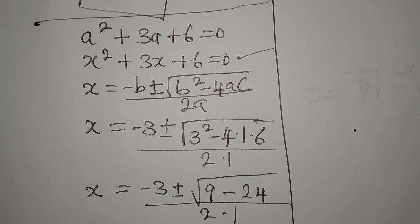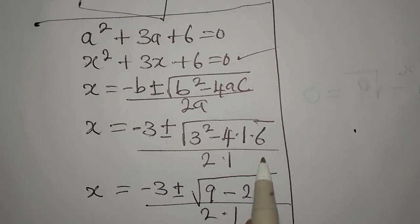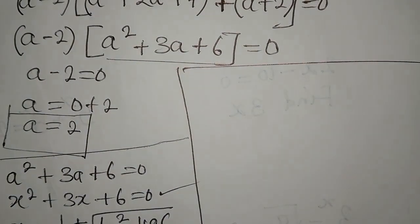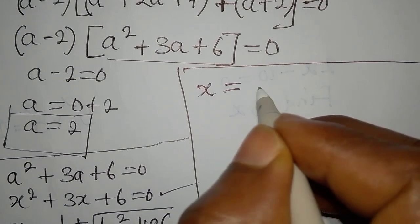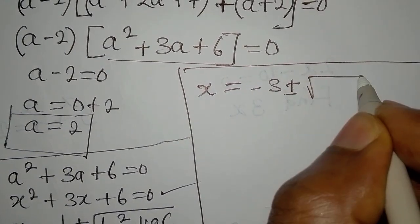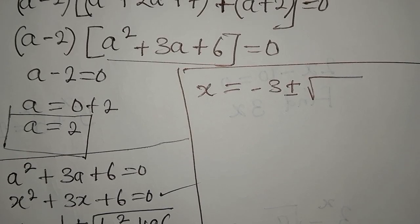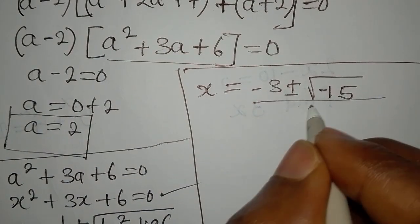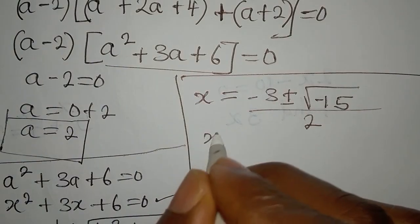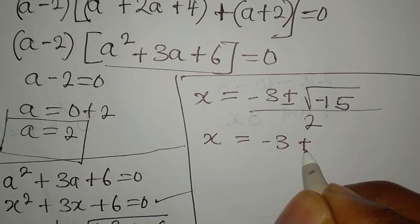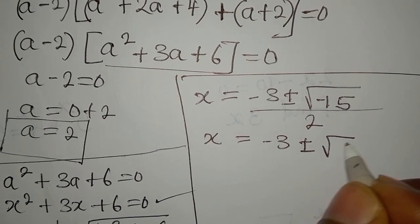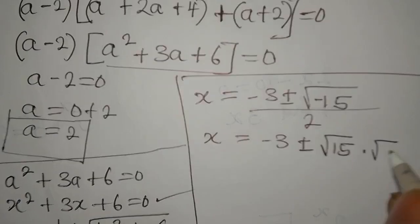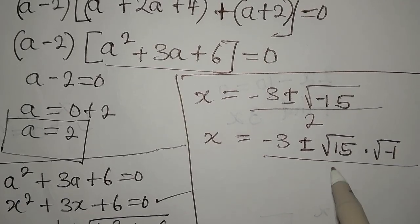The 24 comes from 4 × 1 × 6. So we simplify: 9 − 24 = −15, giving x = (−3 ± √(−15)) / 2. Since this is negative under the square root, we write it as √15 multiplied by √(−1), which is i, divided by 2.